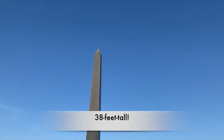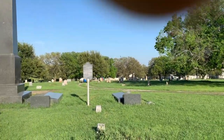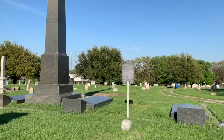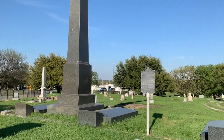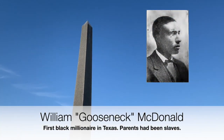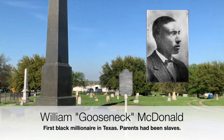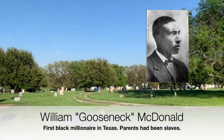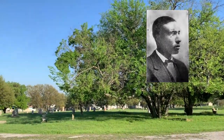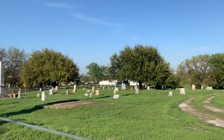This monument was erected by a man known as Gooseneck McDonald, who lived to the ripe old age of 84. He was a businessman who owned a bank and was a politician — very influential. He had a remarkable ability to unite whites and blacks on many issues, which we could certainly use more of today. I would have loved to have met him.